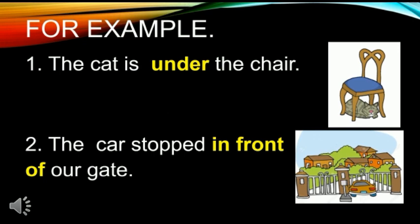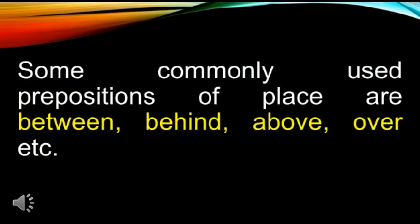For example, 'The cat is under the chair.' Here we have used the preposition 'under.' 'The car stopped in front of our gate.' Here we have used the preposition 'in front of.' In these sentences, the prepositions 'under' and 'in front of' tell us where something or someone is. Some commonly used prepositions of place are: between, behind, above, over, etc.